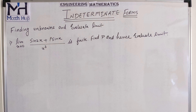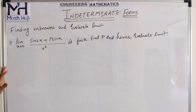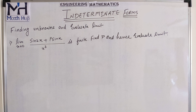Welcome to Math Sub. In this video we will learn about indeterminate forms. The topic we are covering is finding the value of unknowns and hence evaluate the limit. In finding the value of unknowns, we mainly have three types: when you have to determine one unknown only, when you have to determine two unknowns, and when you have to determine three unknowns. We start with one unknown, then two unknowns, then three unknowns.